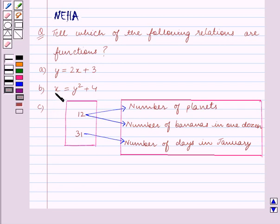Part B is x equals y squared plus 4. In part C we are given two sets in which the element 12 from the first set is mapped to number of planets and number of bananas in one dozen, and 31 is mapped to number of days in January.